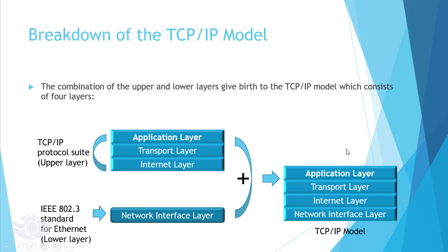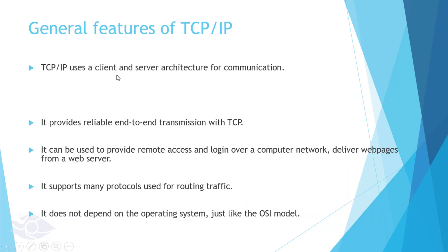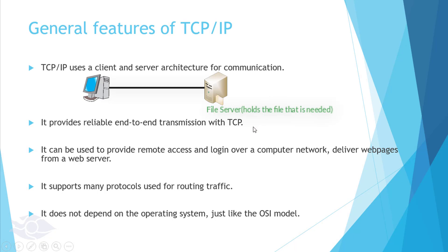What makes the TCP/IP model so great? First, it uses a client and server architecture — the device running the service or possessing the file or folder is a server, and the client initiates a connection to the server to get the file. Second, it provides reliable end-to-end transmission with TCP. Third, it can be used to provide remote access and login over a computer network, and deliver web pages from a web server, as in the case of HTTP and HTTPS. It also supports many protocols that help to route traffic. Finally, just like the OSI model, it does not depend on the operating system. Many devices have TCP/IP implementation in order to access the internet.